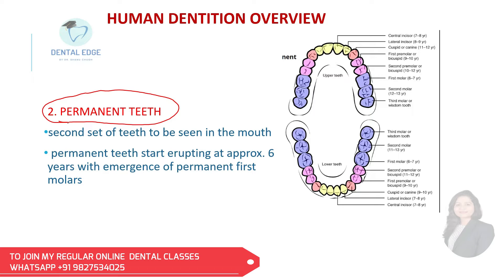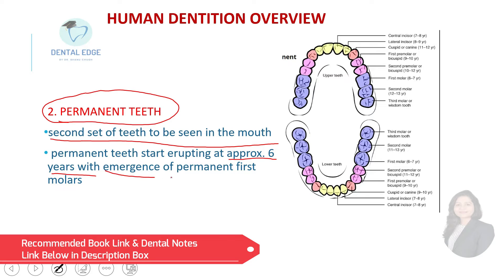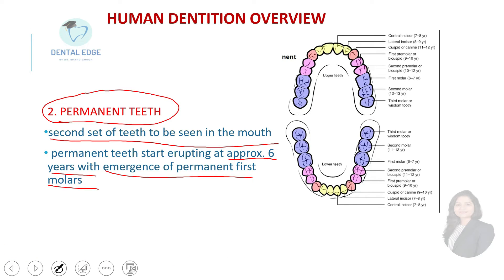The permanent teeth are the second set of teeth to be seen in the mouth. They start erupting at approximately six years of age with the emergence of the first permanent molar. In the permanent dentition, the teeth are: central incisor, lateral incisor, canine, first premolar, second premolar, first molar, second molar, and third molar — eight teeth on each side, giving 16 per arch.